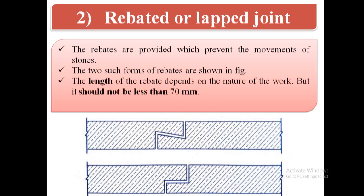The length of the rebates depends on the nature of the work, but it should not be less than 70 mm. The joint is used for arch work, coping on gables, etc.